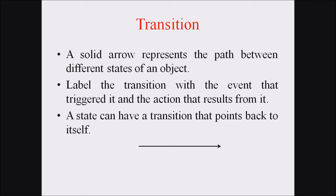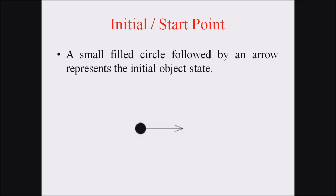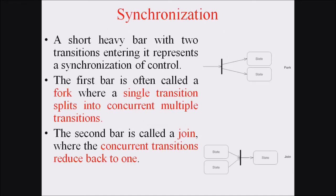A transition notation is represented by a solid arrow that represents the path between different states of an object. A state can have a transition that points back to itself or from one state to another state. The next representation is the initial state or starting point — a small filled circle followed by an arrow represents the initial object state, and every state diagram starts with an initial state.